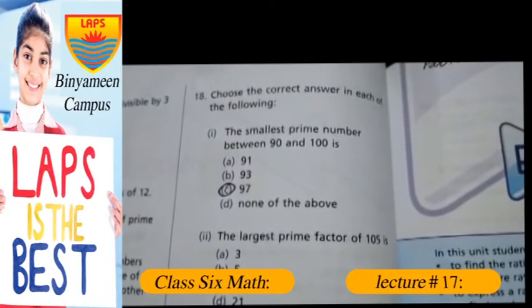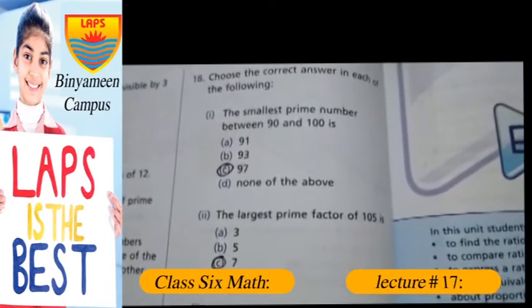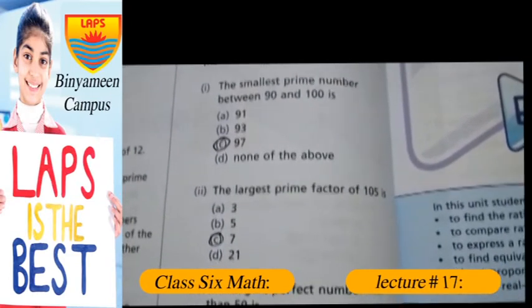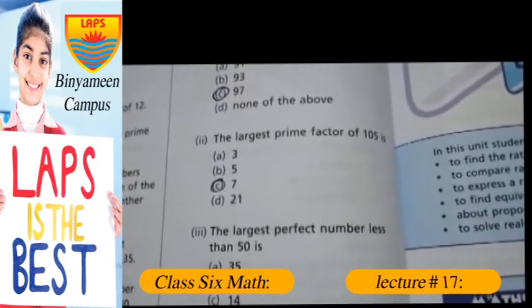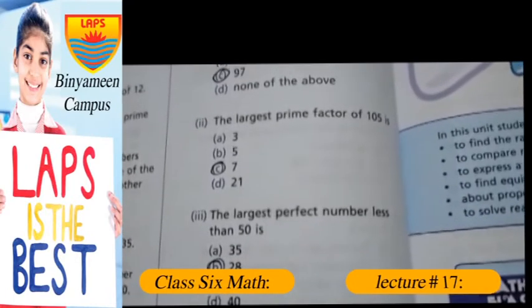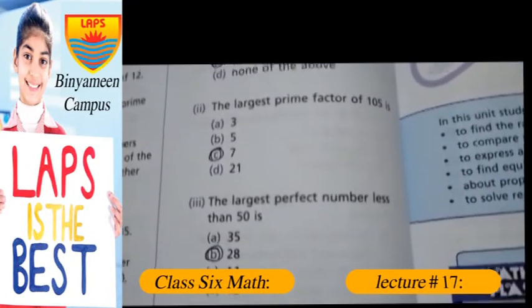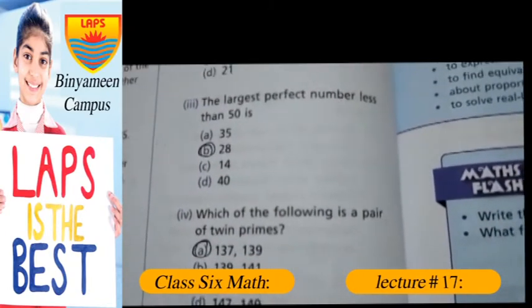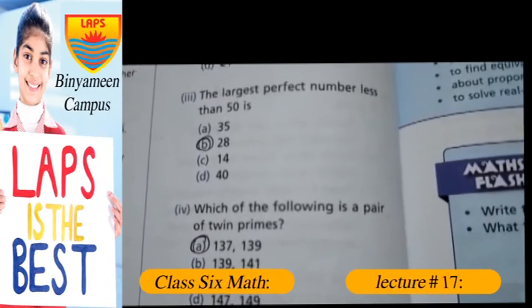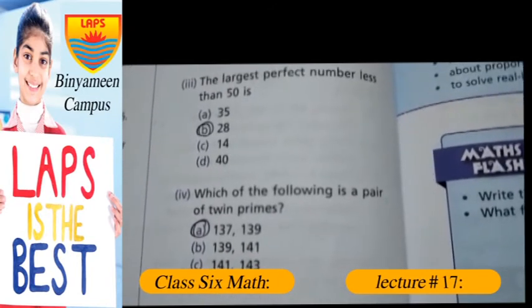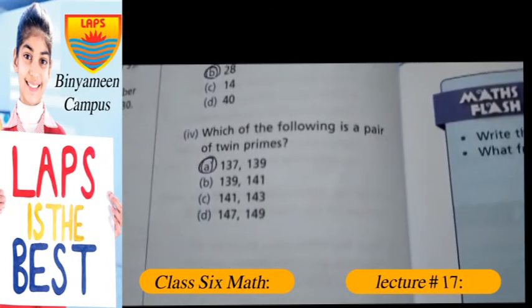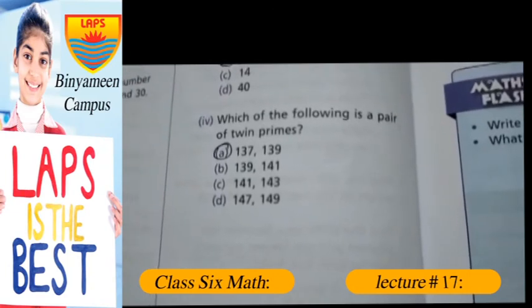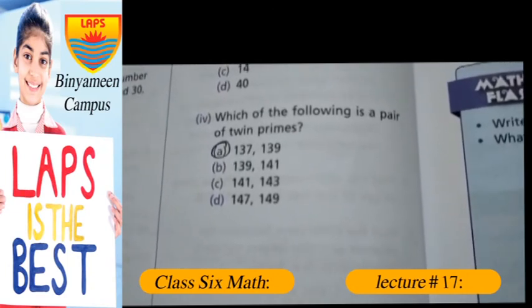Question number 18: choose the correct answer in each of the following. The smallest prime number between 90 and 100 is 97. The largest prime factor of 105 is 7. The largest perfect number less than 50 is 28. Which of the following is a pair of twin primes? 137 comma 139.